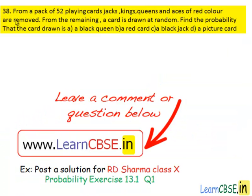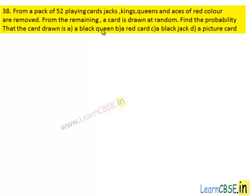Let's see the 30th question. From a pack of 52 playing cards, Jacks, Kings, Queens and Aces of red color are removed. From the remaining, a card is drawn at random. Find the probability that the card drawn is: a black Queen, a red card, a black Jack, a picture card.